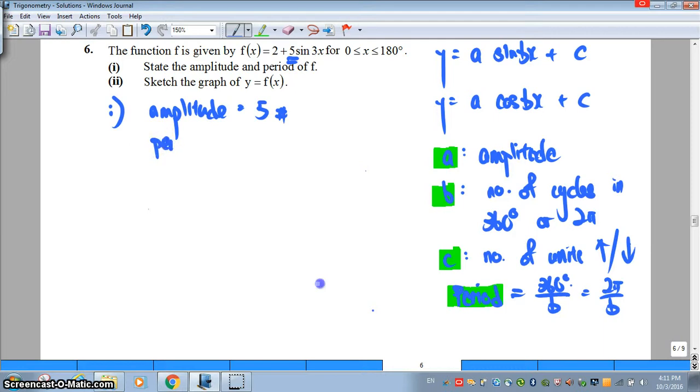The period, if you remember the formula, since our answers are in terms of degrees, it must be 360 divided by B. And B in this case is 3. What it's telling you is you will need 120 degrees to have one complete cycle. We are ready to tackle part 2.